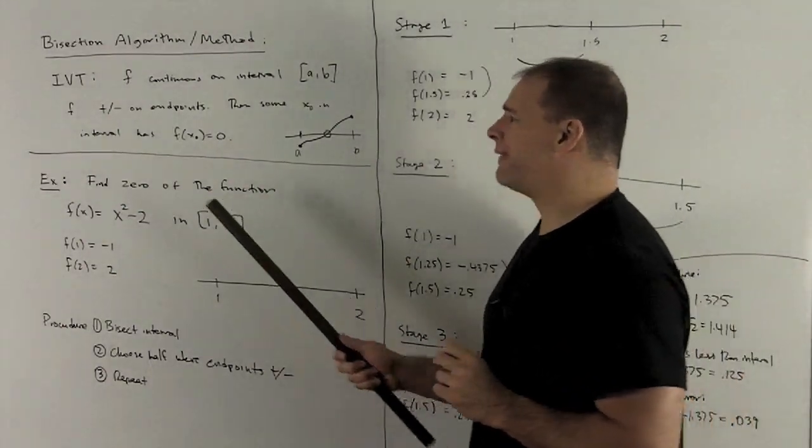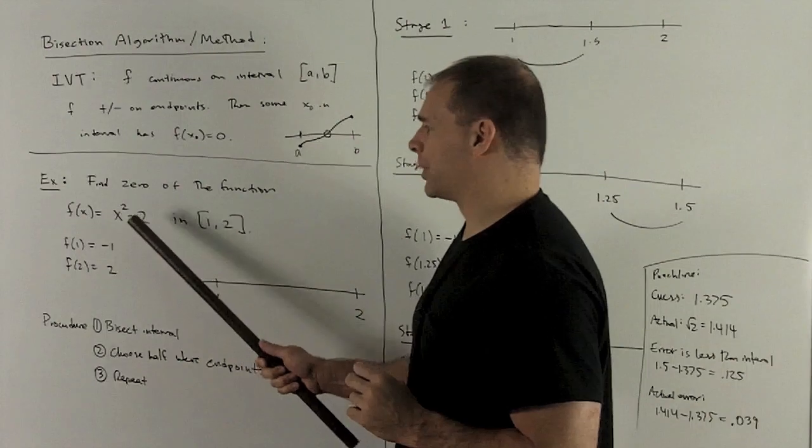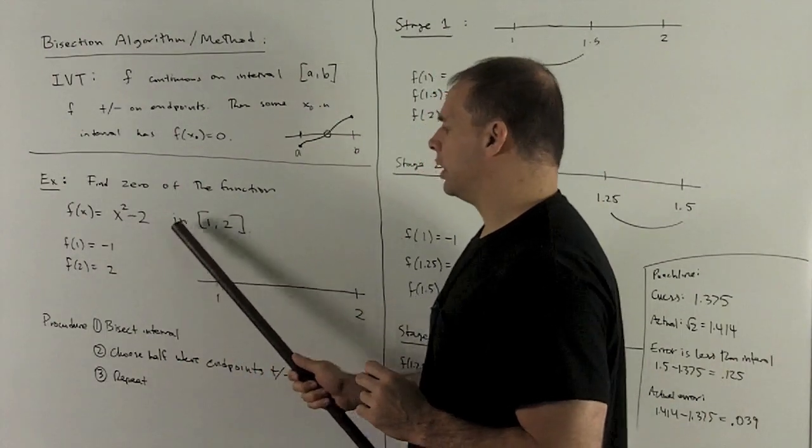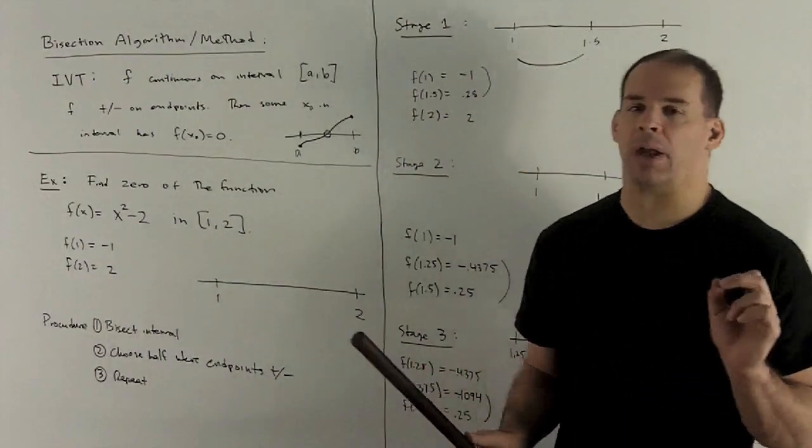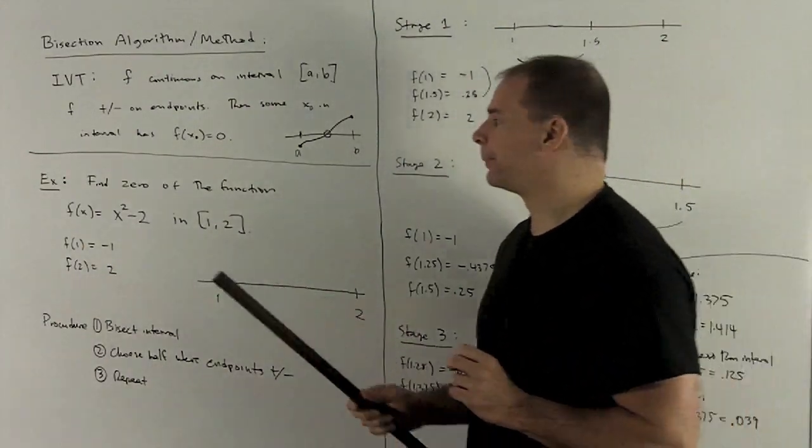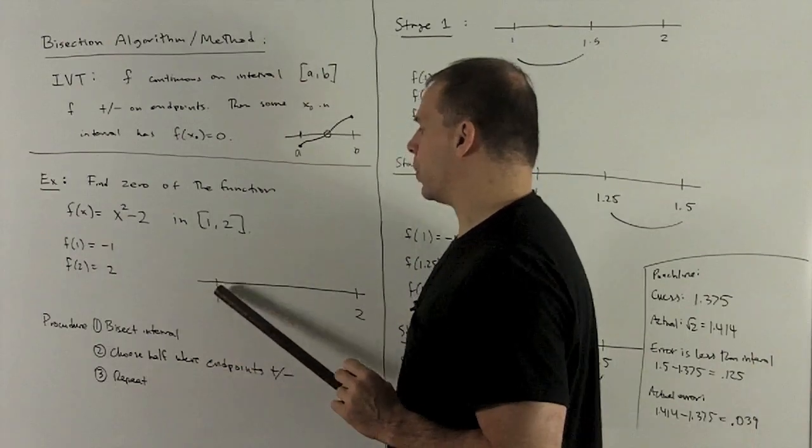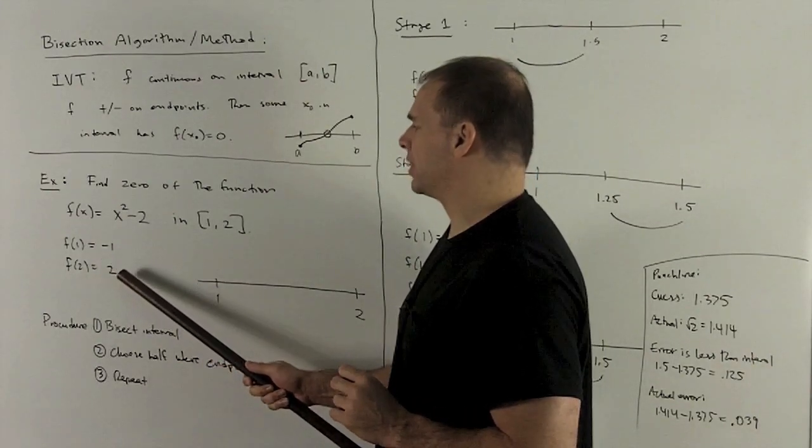So I want to find the 0 of the function f(x) = x² - 2 in the interval from 1 to 2. Now, how do we know there's even a 0 in there? If I put 1 into my function, I'm going to get minus 1. Put a 2 in, I'm going to get a 2.